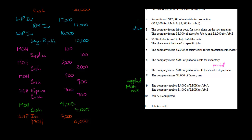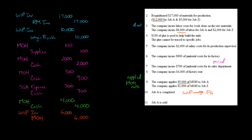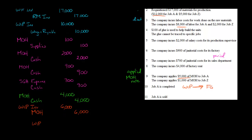Job A is now completed. We need to take the costs associated with Job A from work in process inventory to finished goods inventory. Job A had $12,000 of direct materials, $8,000 of direct labor, and $5,000 of applied overhead — totaling $25,000. So we debit finished goods inventory and credit work in process inventory for $25,000. Assets are unchanged; we're just transferring from one inventory account to another.